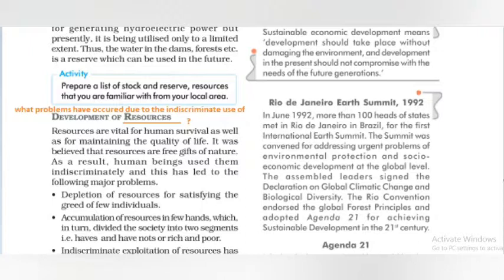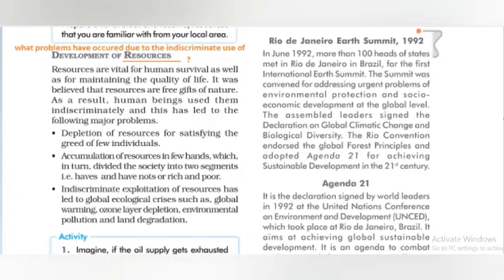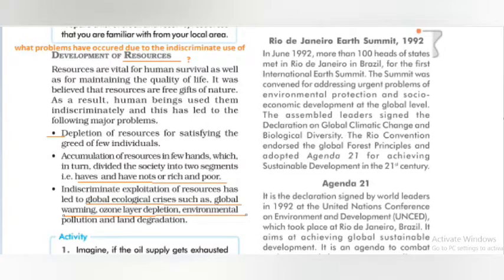The answer as given in the book: First, depletion of resources for satisfying the greed of few individuals. Second, accumulation of resources in few hands, which divided the society into two segments — haves and have-nots, or rich and poor. Third, indiscriminate exploitation of resources has led to global ecological crises such as global warming, ozone layer depletion, environmental pollution, and land degradation.